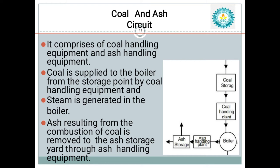When coal is burned, it releases flue gases. After burning, the coal forms ash. The ash falls down into an ash pit and is sent to ash storage with the help of ash handling equipment. This is the process in the coal and air circuit.